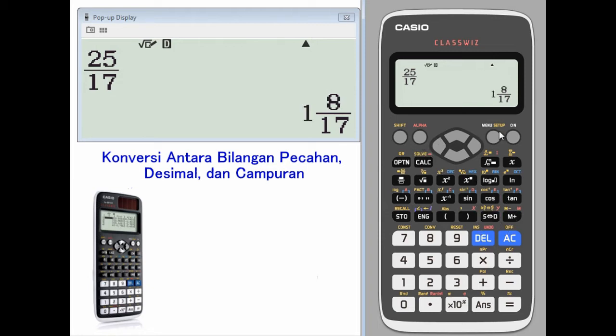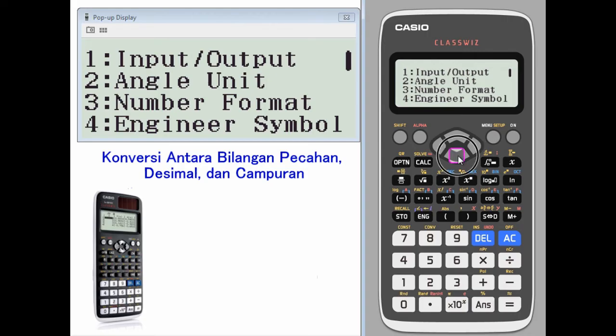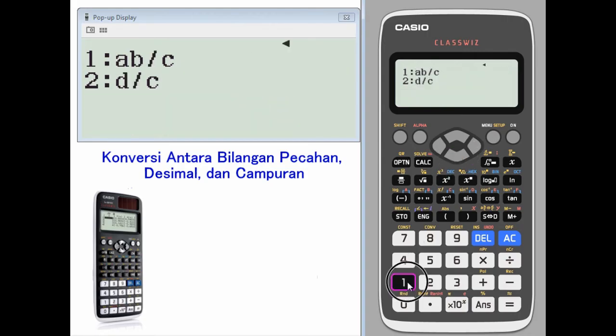The way to set up to default to a mixed number is SHIFT SETUP, toggle down, fraction results, choose mixed number.